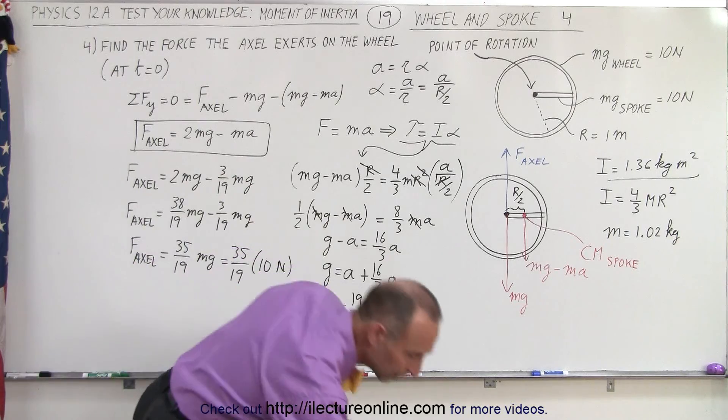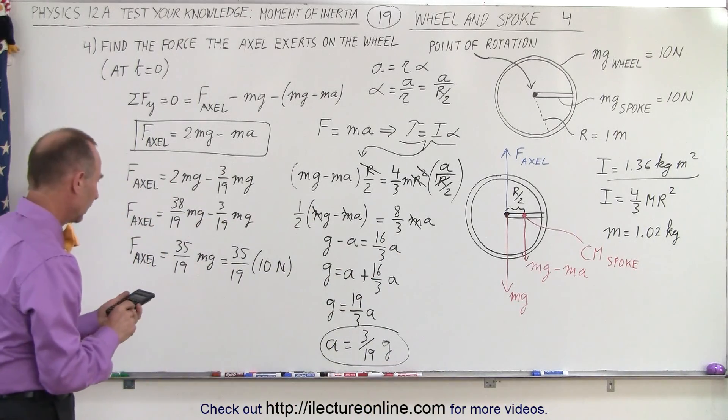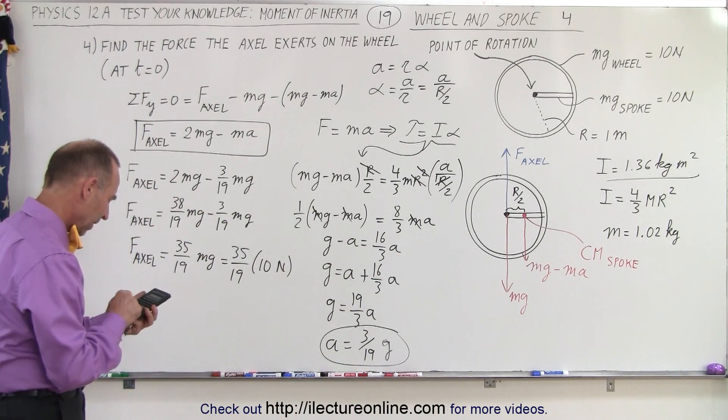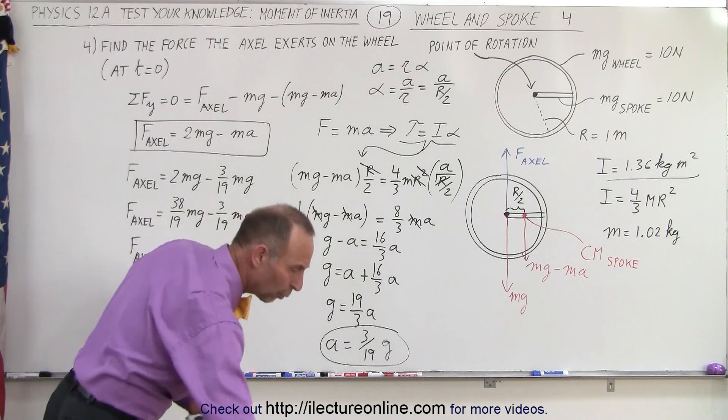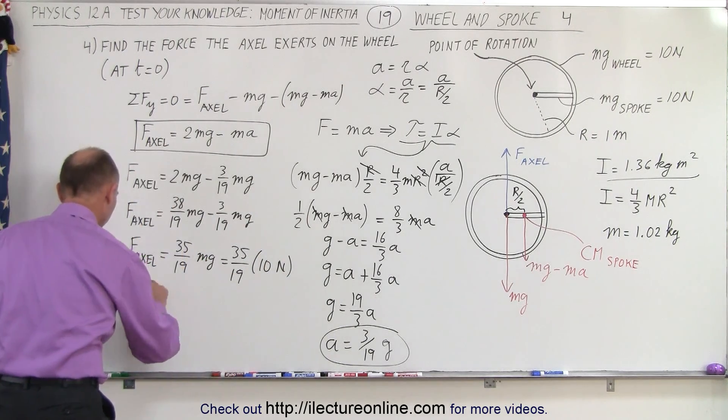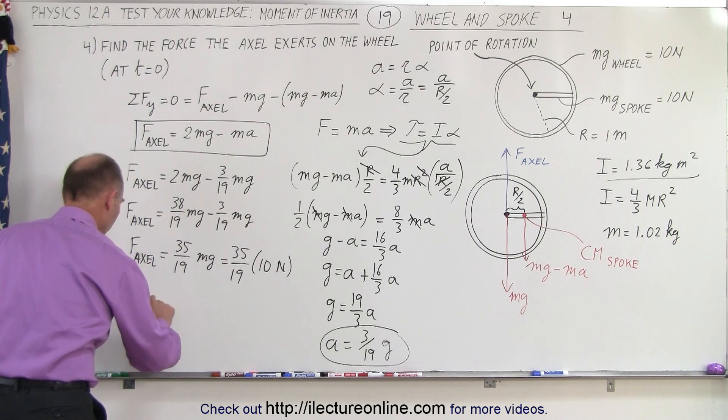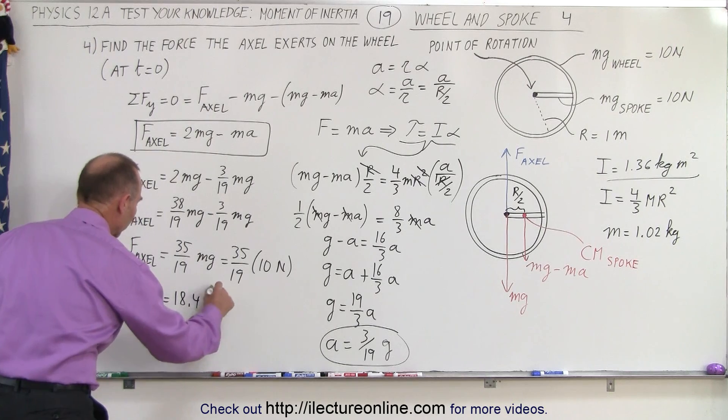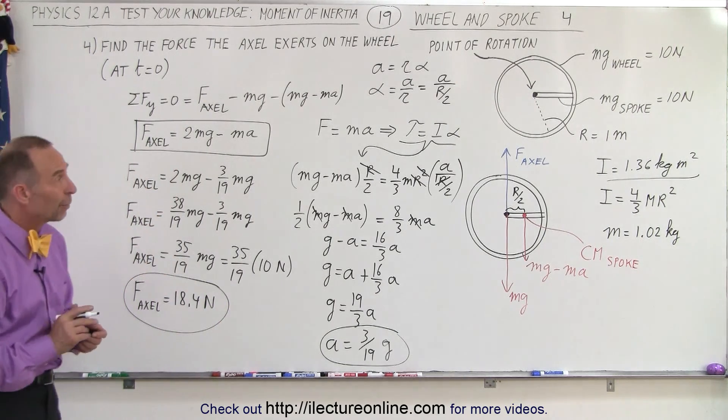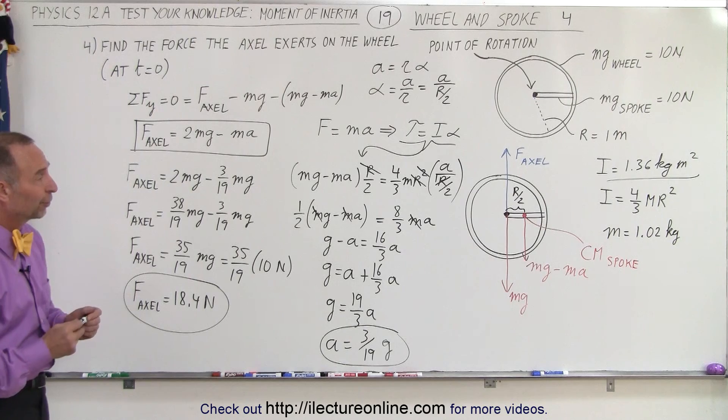And so finally, where's my calculator? There we go. We got 35 divided by 19 times 10, which is 18.4. So the force that the axle exerts on the wheel is equal to 18.4 newtons. And that is how we find that particular force.